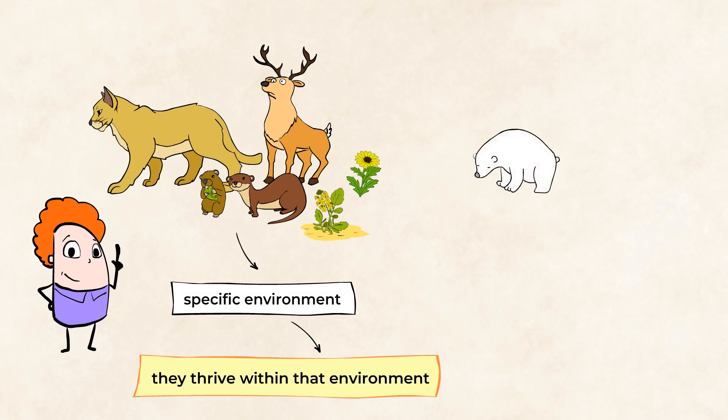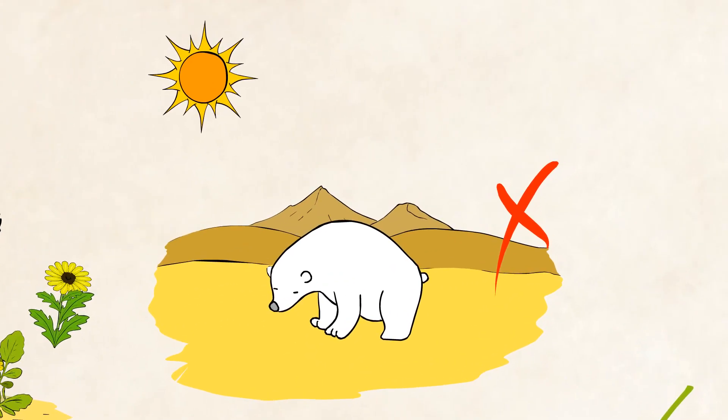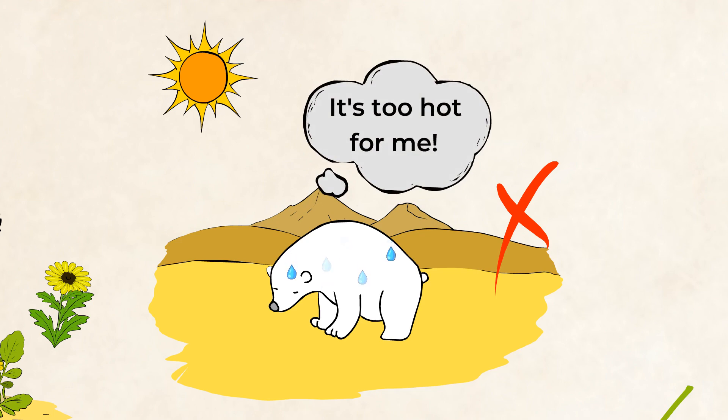And that means a polar bear would simply not do well in a desert. Polar bears are built for cold, snowy environments. This means that in the desert, the polar bear would surely die. Think about it. A polar bear would not be able to blend in its surroundings to hunt, as their color would be different from the sand of the desert. And the polar bear would be too warm, as they have too much fur and fat insulation for a desert environment.